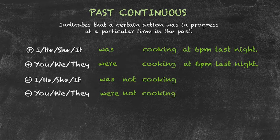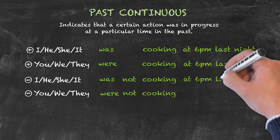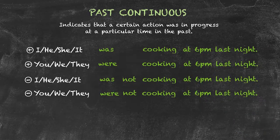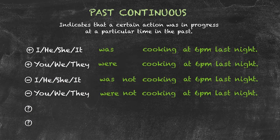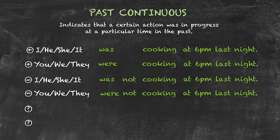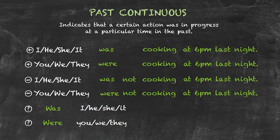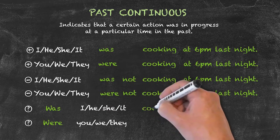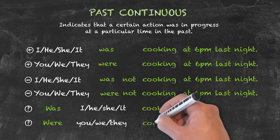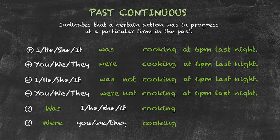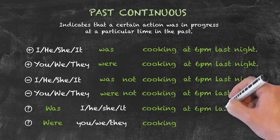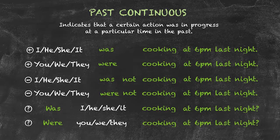In order to form the negative sentence for the past continuous, we add the word not in between the past form of the auxiliary verb to be and our main verb, which here is cooking. So of course we have, he was not cooking last night, and we were not cooking last night. In order to form the question form of the past continuous tense, again we're going to invert the subject and the auxiliary verb. So we start our question with was or were, depending on our subjects, and we keep our present participle form of the verb, which is our main verb in the question. So, was he cooking last night? Or, were you cooking last night?